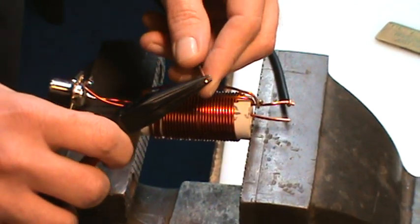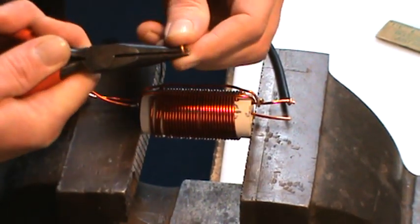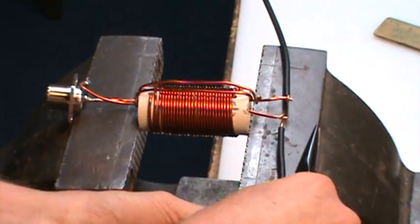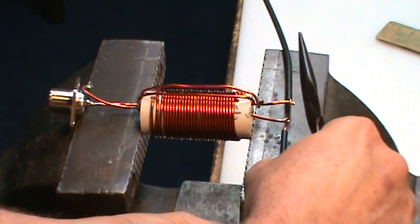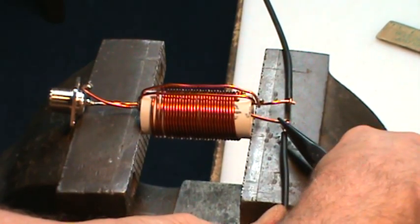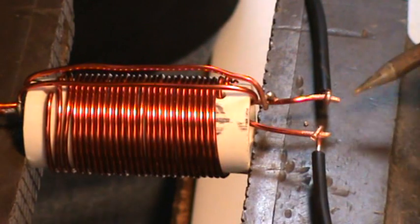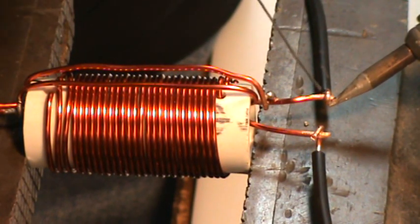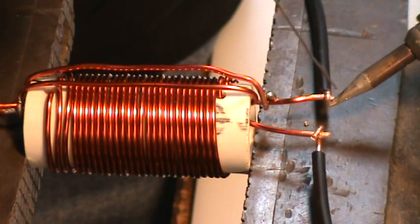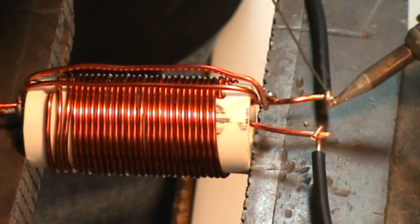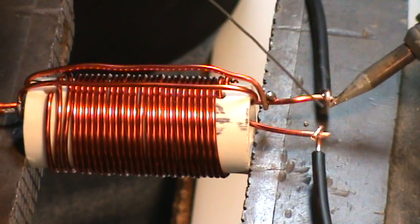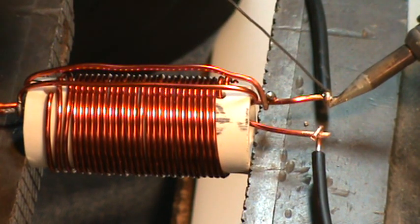And I'm going to do the same thing on the other side, bend a little loop. Then come over here with the pliers and crimp it.